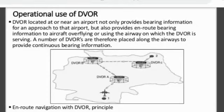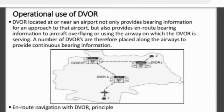Operational use of DVOR. DVORs are usually located at or near an airport. It can give information to an approaching aircraft as well as to an enroute aircraft flying above this airport. It can give bearing information to an aircraft approaching to this DVOR or to this airport, as well as it can give direction to aircraft flying to some other airport — that is enroute.